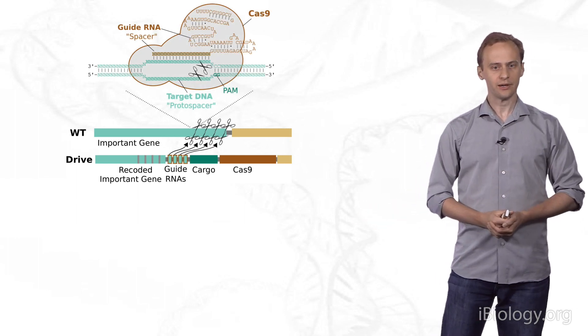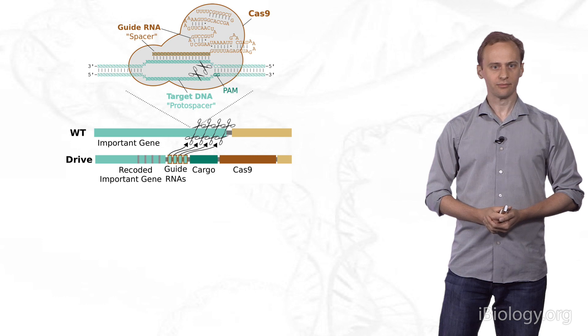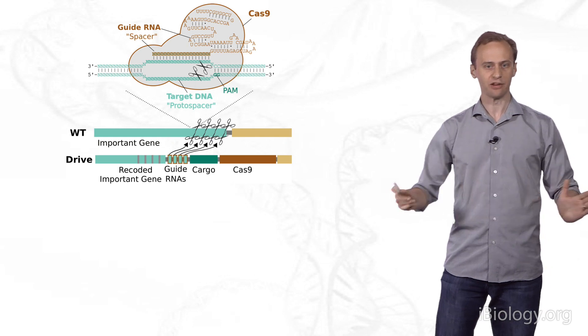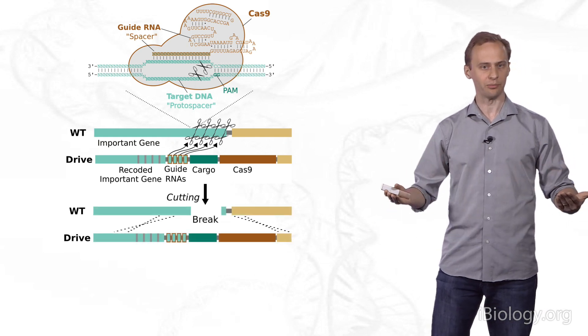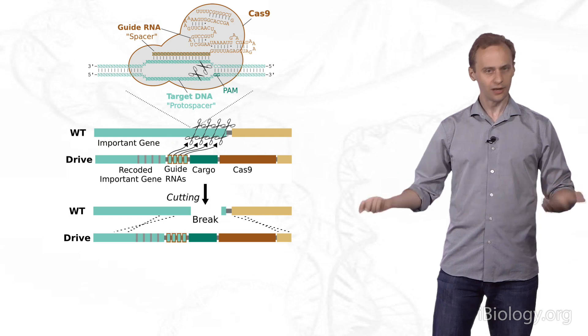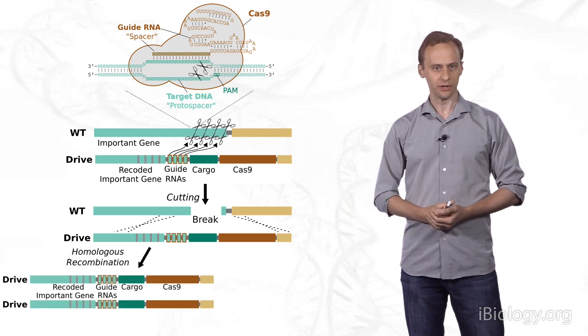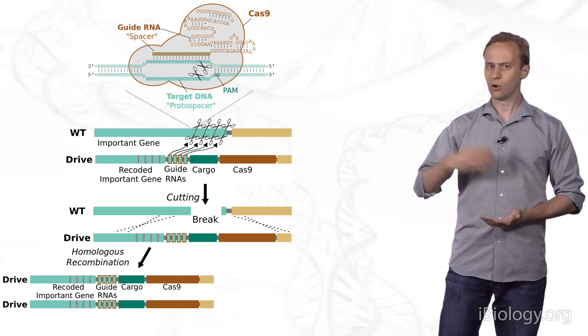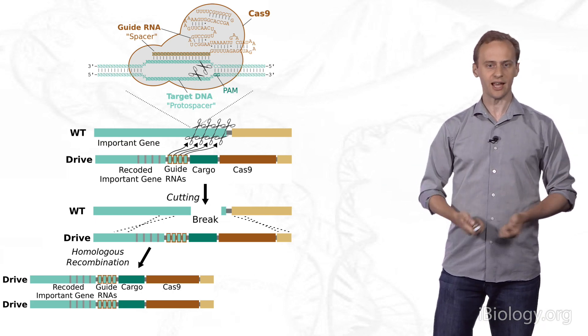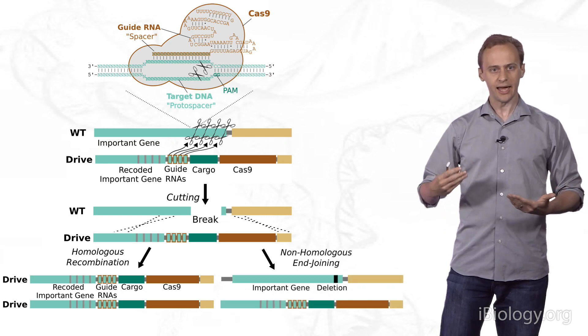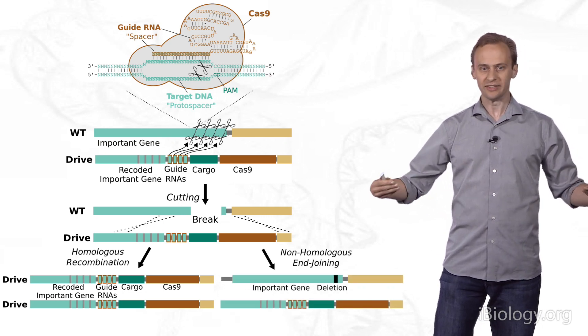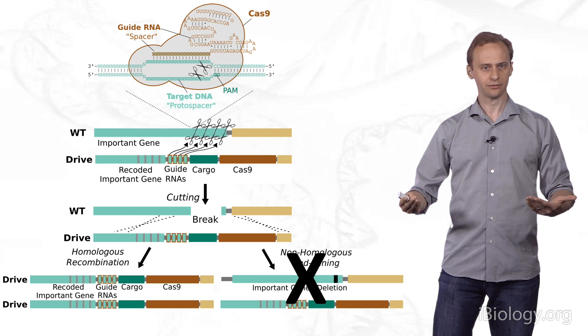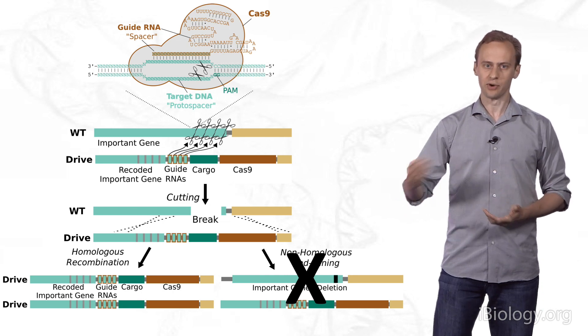In the reproductive cells of heterozygotes that have one copy of each, CRISPR components will be produced. They will cut the important gene at many different sites, causing this double-strand break. The cell will then repair the damage either by homology-directed repair, in which case the drive system is copied, so now there are two copies and it is guaranteed inheritance, or it will jam the ends together of the broken DNA. If this happens, it will delete this important section of the gene. That means that the result will be more costly, evolutionarily, than the drive system itself.